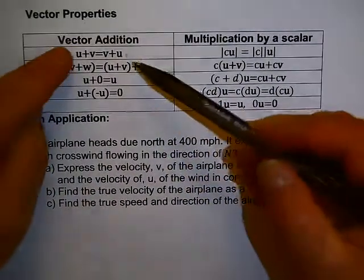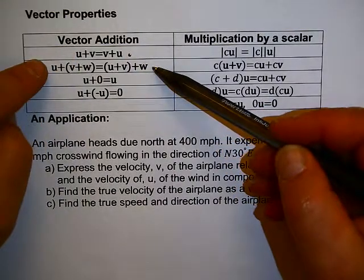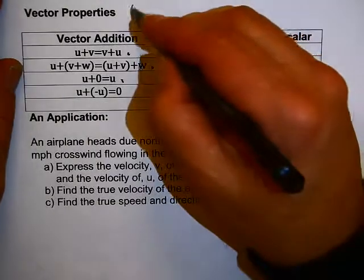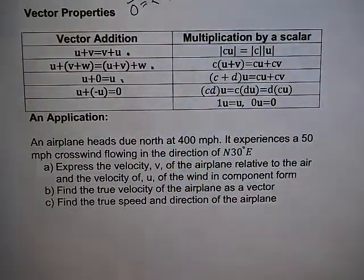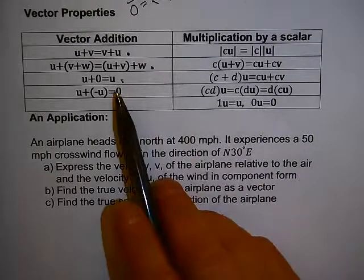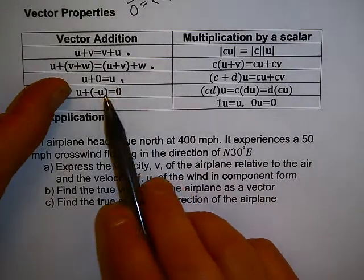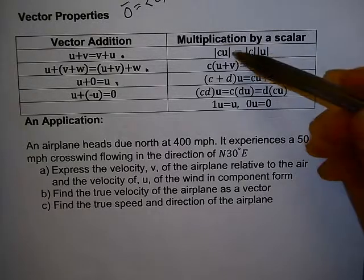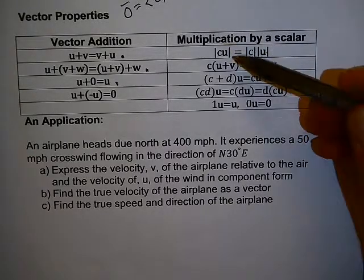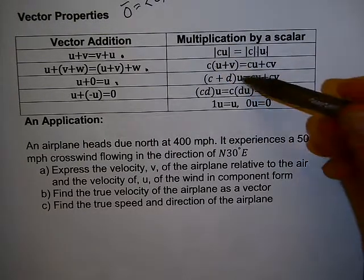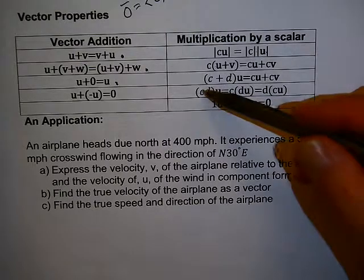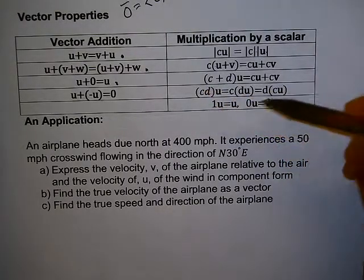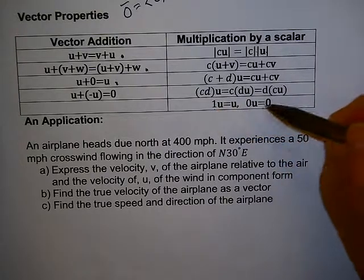A few last things about vectors. Vectors have properties just like numbers do: you can add vectors in any order, you have the associative property. If you add the zero vector — the vector that starts and ends at the origin — you end up with your original vector. If you add a vector and its opposite, you get zero. For scalar multiplication: you can multiply by a scalar, bring the scalar out, the scalar distributes, the vector distributes over the scalar, and these multiplication rules also apply.